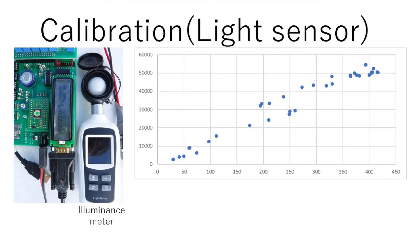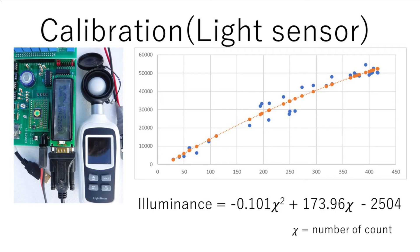The light sensor was calibrated using an illuminometer. The graph shows the distribution of illuminance and digital count. The approximate curve and formula were calculated by the least squares method.